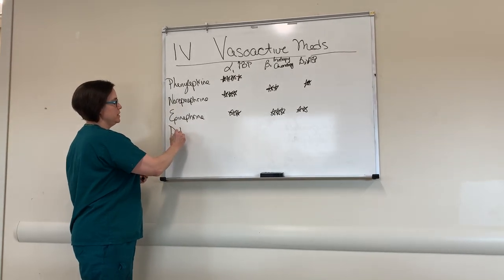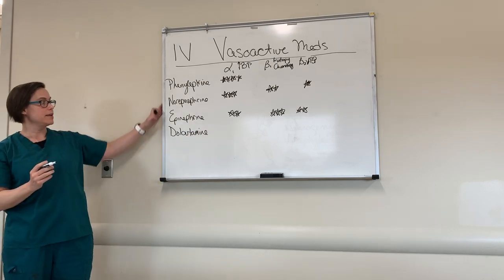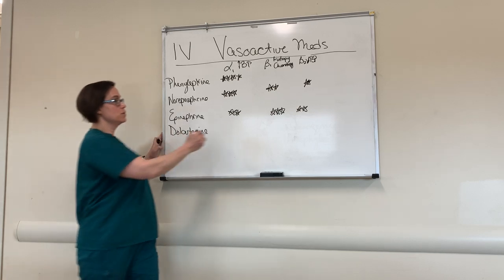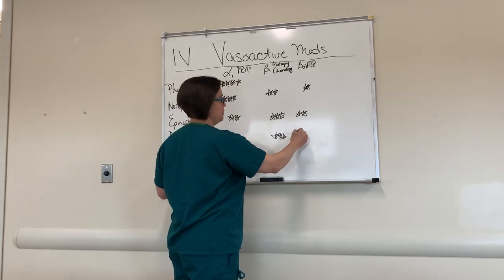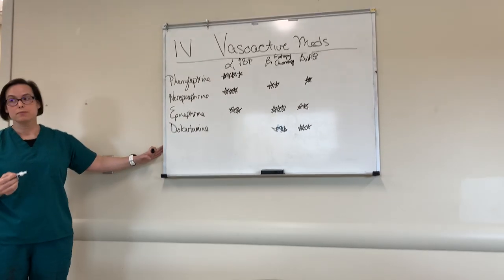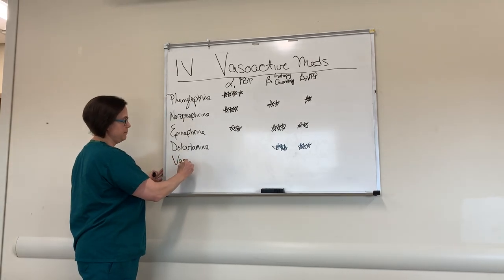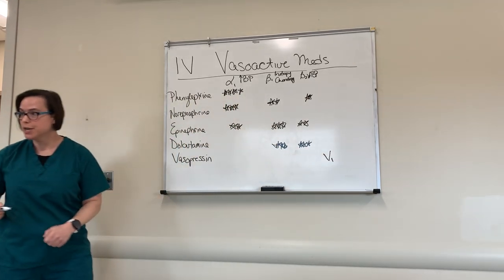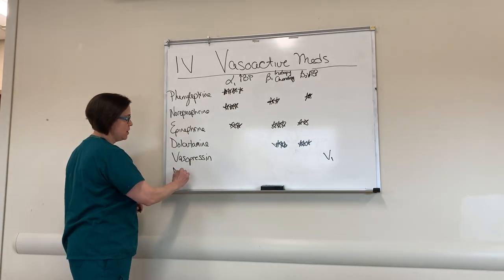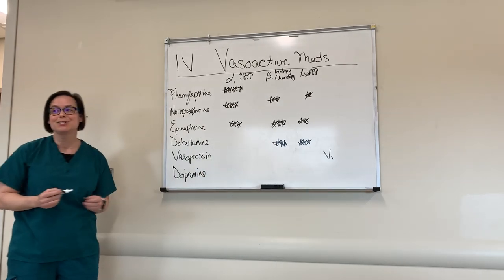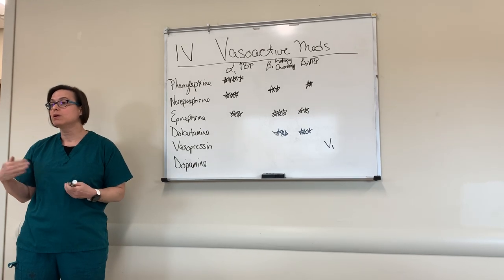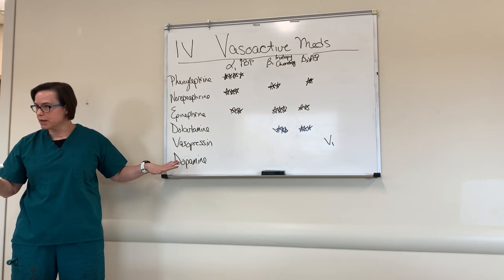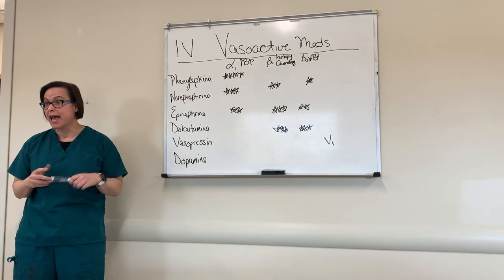Dobutamine is the first one we think of as an inotrope rather than a vasopressor. It makes the heart squeeze faster and better — it's predominantly beta. Two other important ones: vasopressin, which acts on its own vasopressin receptor — it's its own mechanism. And dopamine — we won't dwell on it because it causes more arrhythmias without meaningful benefit over the other agents.